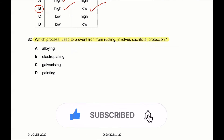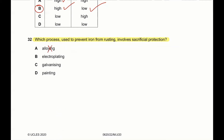Question 32: which process used to prevent iron from rusting involves sacrificial protection? Sacrificial protection does not occur in alloying — alloying uses unreactive metals or non-metals to resist corrosion. It does not occur in electroplating — that uses a more unreactive metal coating. It does not occur in painting — that uses a polymer coat to prevent contact with oxygen. Galvanizing uses zinc as a coat and zinc is a more reactive metal, making it a form of sacrificial protection. So 32 C is correct.